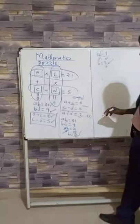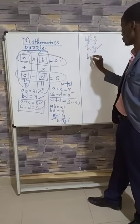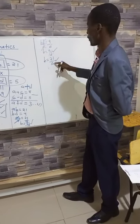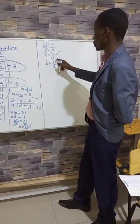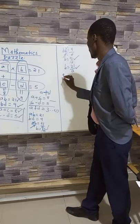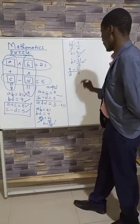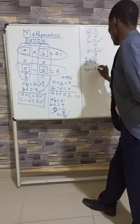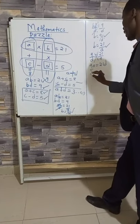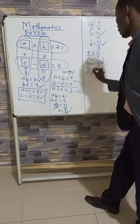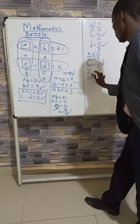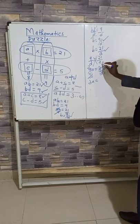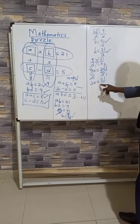Since both expressions equal B, we set them equal: 9 over D is equal to 21 over A. We cross multiply. 9 times A gives 9A, equal to 21 times D. 3 is common, so we divide both sides by 3. This gives us 3A is equal to 7D. This becomes our second equation.